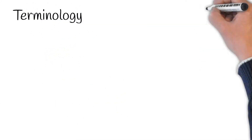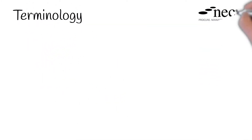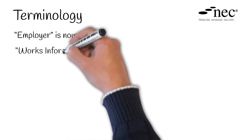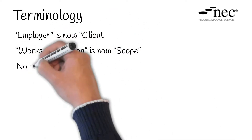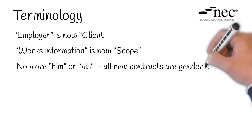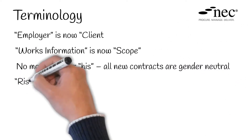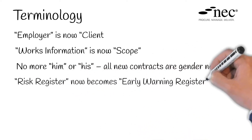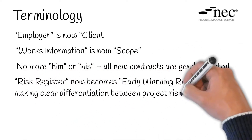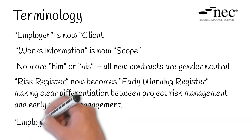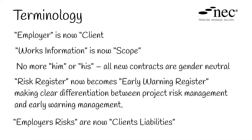Terminology. NEC4 made some changes to the terminology used, aiming to make things more up to date and understandable. Employer is now client. Works information is now scope. All new contracts are gender neutral, with no more 'him' or 'his'. Risk register now becomes early warning register, making it clear between project risk management and early warning management. And employer's risks are now client's liabilities.